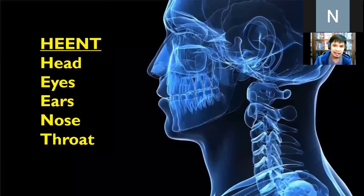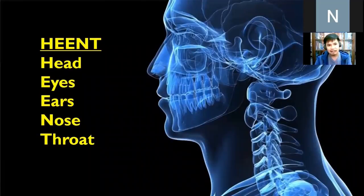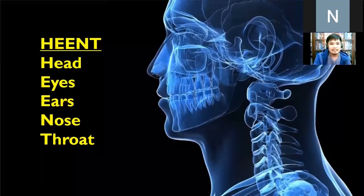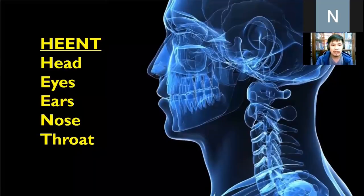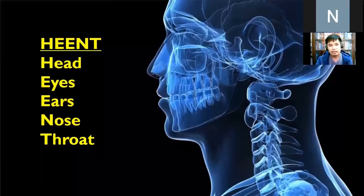The assessment of the head is included in your HEENT: Head, Eyes, Ears, Nose, and Throat. But for our topic this morning, we'll just focus on the head, the nose, and the throat because we'll have a separate lecture on eyes and ears.